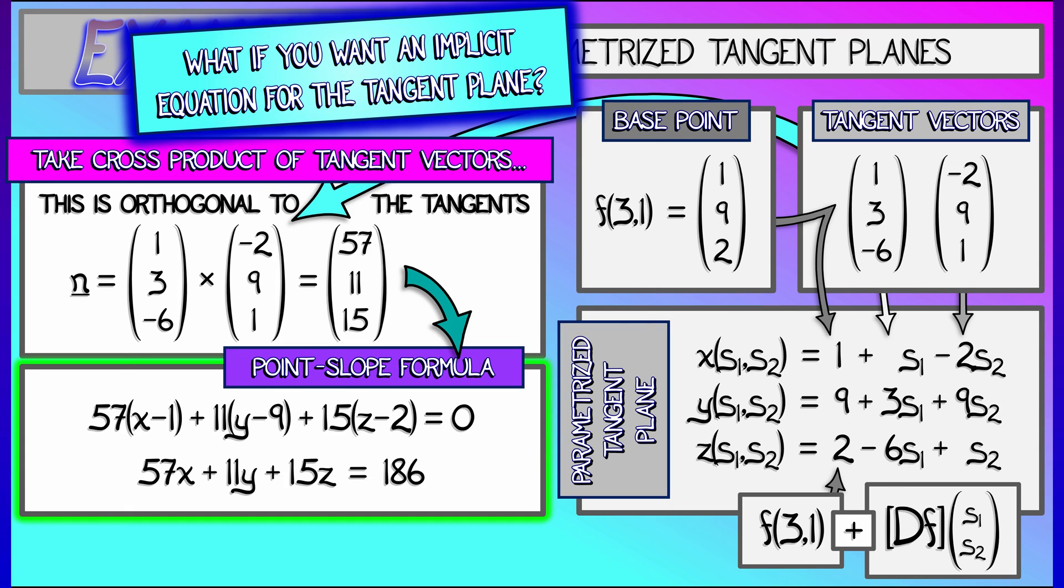Is this right? Well, if we plug in x equals 1, y equals 9, z equals 2, I think this is going to work. As to which you prefer, well, that's up to you. Implicit, parametrized, whatever. Each has its own advantages.